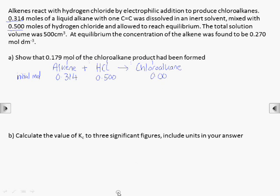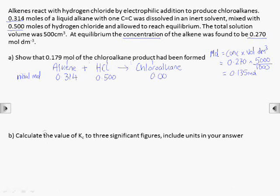Sometimes we may be given moles of one substance at equilibrium, but here we've been given a concentration, so we'll need to work it out. Concentration of the alkene equals 0.270, and the volume of the solution is 500 cubic centimeters, not 5000 as I seem to have written here, which is 0.5 cubic decimeters. So the moles of alkene at equilibrium is 0.135.